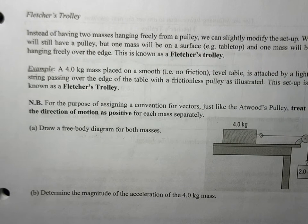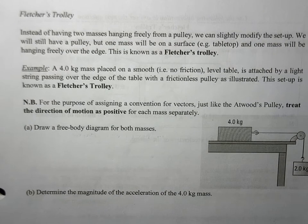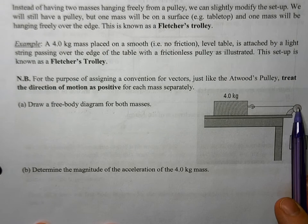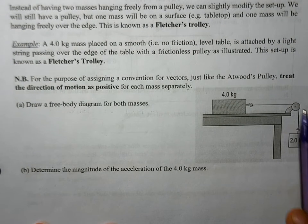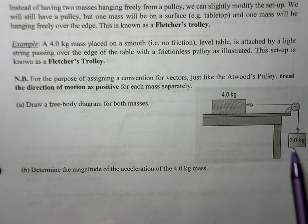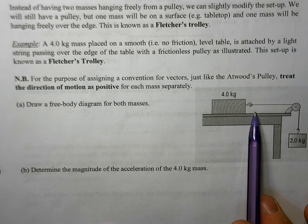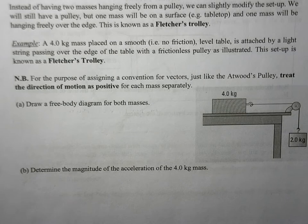The last thing we have to talk about in our two-body systems and pulleys is the Fletcher's Trolley. The Fletcher's Trolley is not quite the Atwood's pulley. Basically, you still have a pulley, but you're going to have a mass that's freely hanging and also a mass on a surface. So the two masses aren't both freely hanging over the pulley — one is freely hanging, one is going to be on a surface like a tabletop.